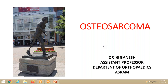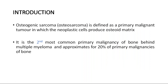Today I'm going to discuss Osteosarcoma. I'm Ganesh, an Assistant Professor at the Department of Orthopedics. Osteo means bone, and Sarcoma means a malignant transformation of osteoid cells, which occurs in bone — that's why it's called Osteosarcoma. Osteogenic Sarcoma and Osteosarcoma are the same; don't think they are different. It is defined as a primary malignant tumor in which neoplastic cells produce osteoid matrix. The osteoid matrix converts into neoplastic cells and becomes malignant.